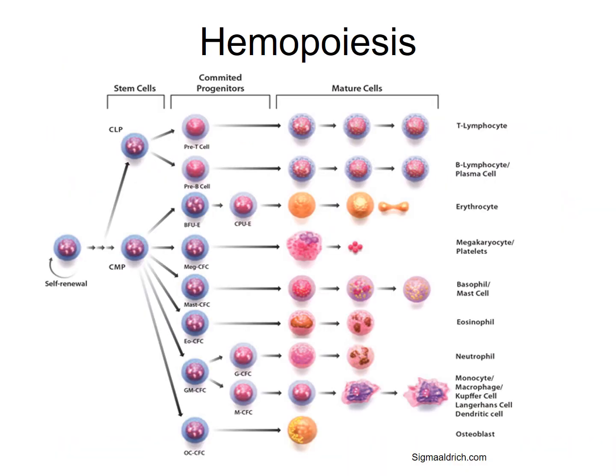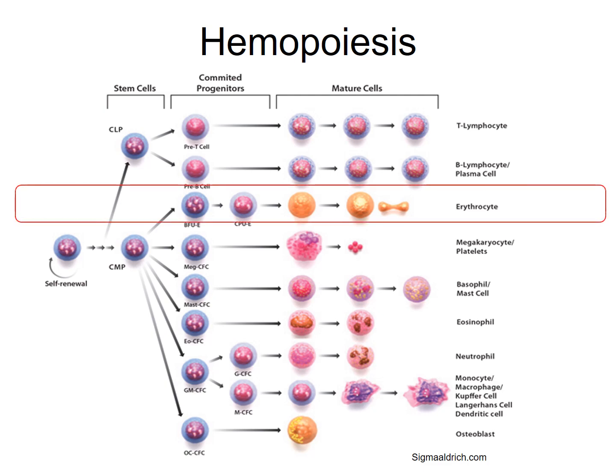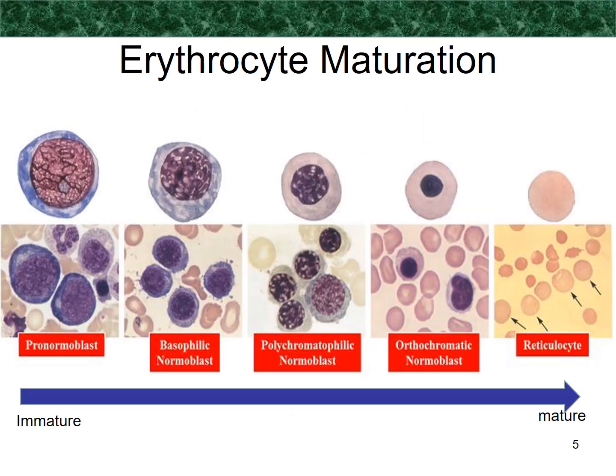In this learning session, we will focus on the erythropoiesis series. Here is the maturation stage of erythroid cells, starting from the most immature form, which is the pronormoblast, then the basophilic normoblast, after that the polychromatophilic normoblast, then the orthochromic normoblast, and last but not least, the reticulocyte.